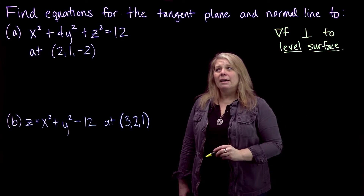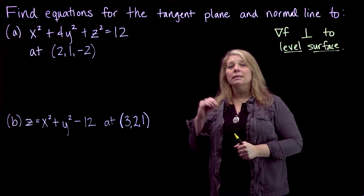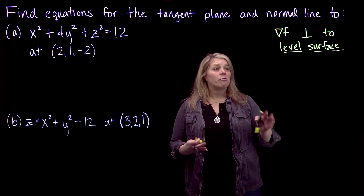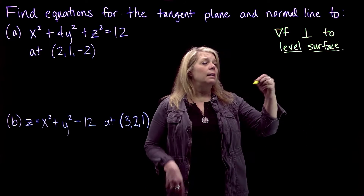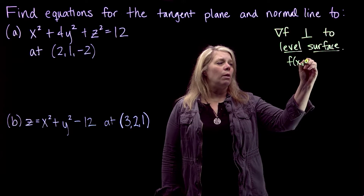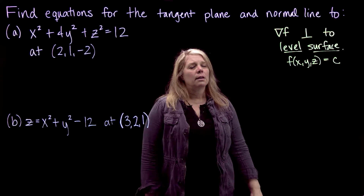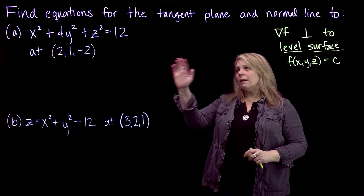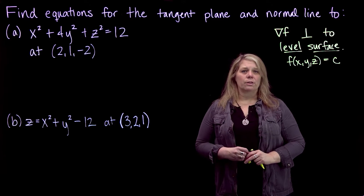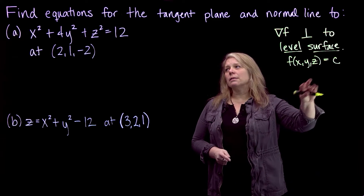The key idea is that I need to think of these surfaces as level surfaces of some function. A level surface is the set of all points x, y, z where a function output is constant. So the key is being able to think of the surfaces I'm given as a function of x, y, z equal to a constant.